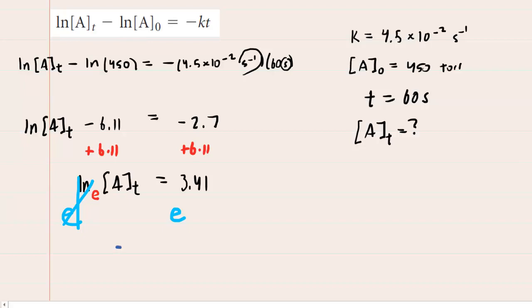And that leaves us with our final answer as being e raised to the 3.41. And if you punch that into your calculator, you're going to get about 30 as your final answer. And that's a pressure, and therefore it came out in torr. So this would be the correct answer to part A.